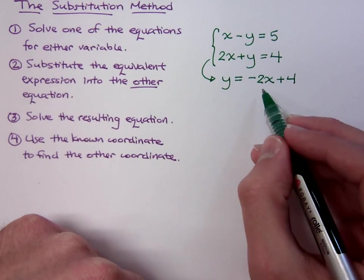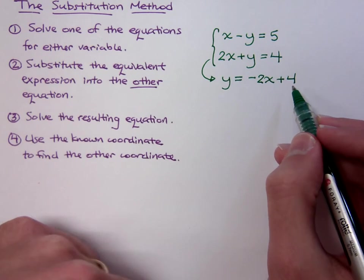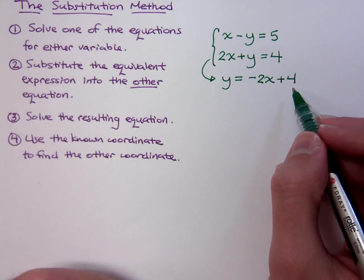So any place that I see y, I can take the y away and put in its equivalent, which is negative 2x plus 4. Notice it says in the other equation.